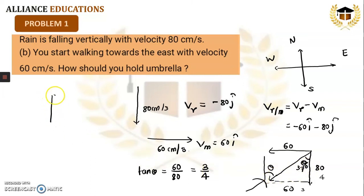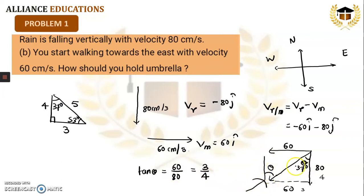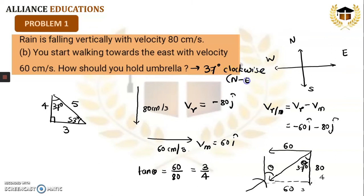The standard 3-4-5 triangle gives 53 degrees and 37 degrees. So the angle of the umbrella with the vertical should be 37 degrees. The umbrella must be held 37 degrees clockwise, or you can say in the north-east direction. That is the answer.